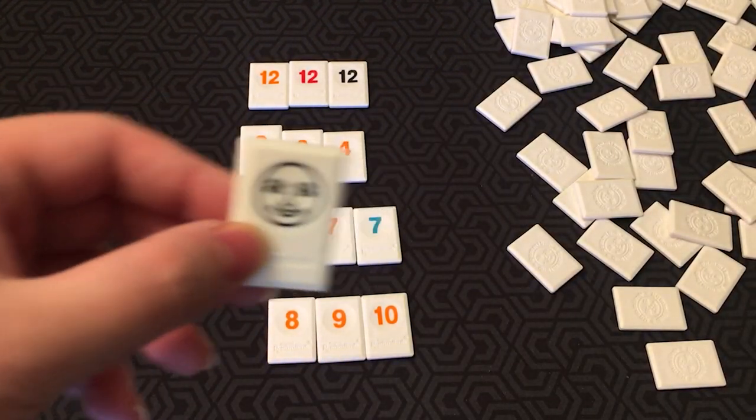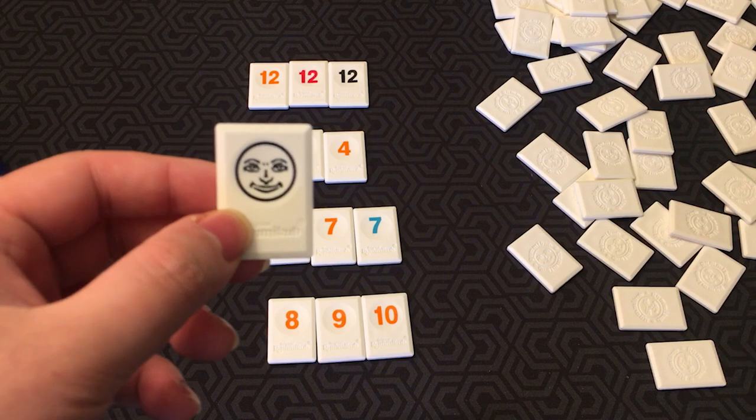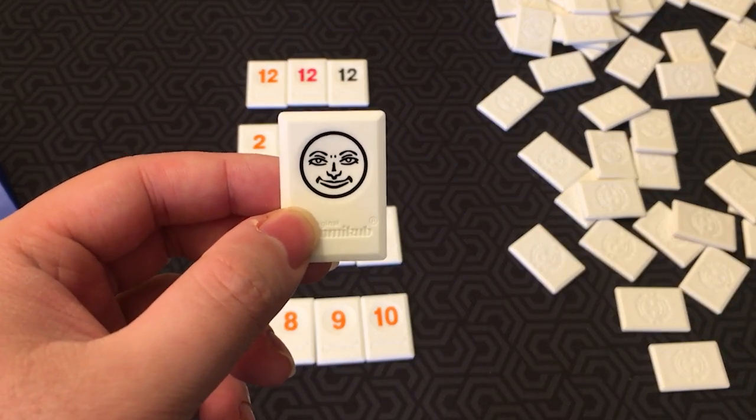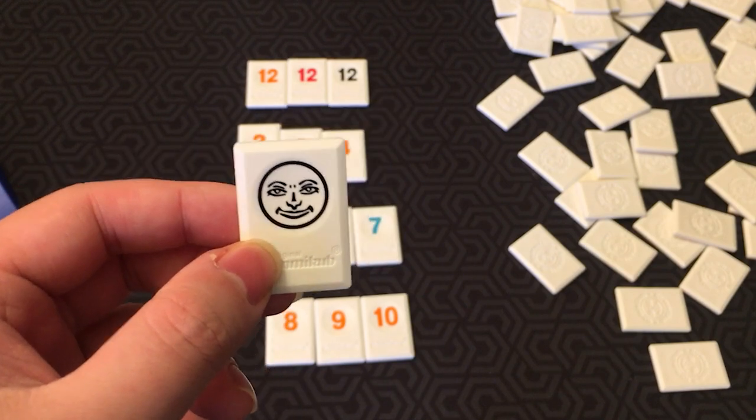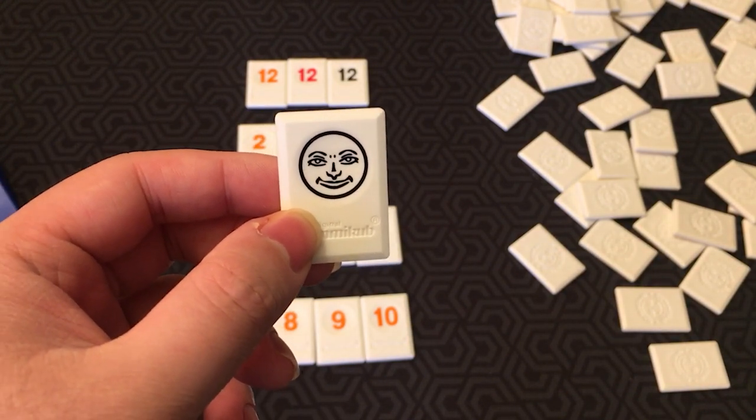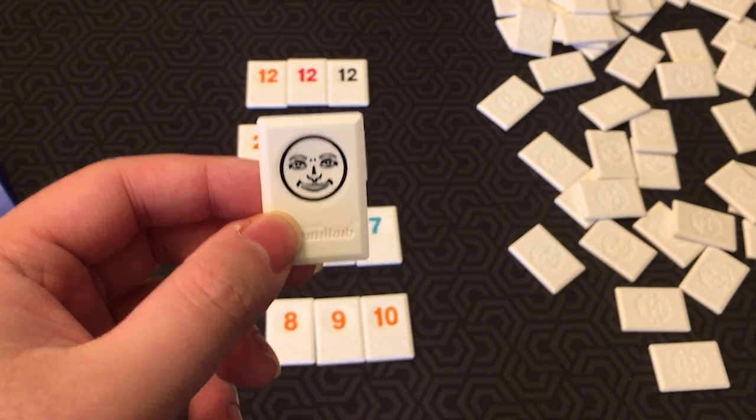Now this is a joker tile. There are two of them in the game. Each joker can be used as any tile in a set, and its number and color are that of the tile needed to complete it. On future turns, you can retrieve a joker from a set on the table if you can replace it during your turn with a tile of the same number and color it represents.